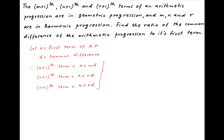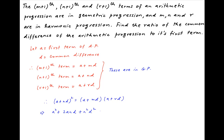We are given that these three terms are in geometric progression. Therefore, the square of the middle term is equal to the product of the first and the third term. Expanding both sides, we get a squared plus 2and plus n squared d squared on the left-hand side, equal to a squared plus ad times (m plus r) plus mrd squared on the right-hand side. A squared cancels on both sides. Let's call this Result 1.